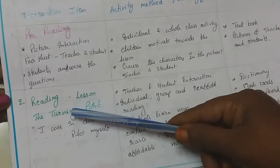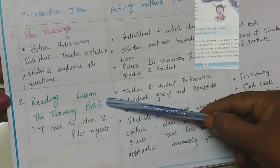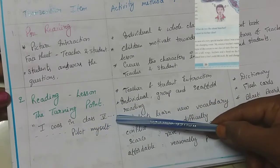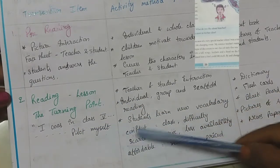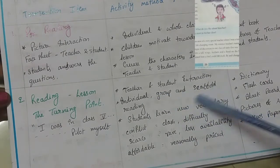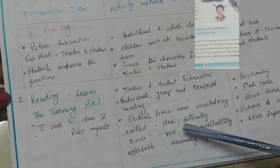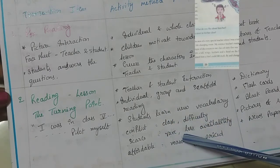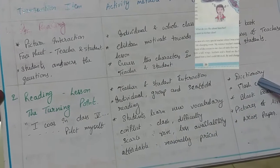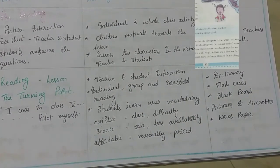In period 2, the reading part, we explain the main lesson 'The Turning Point', segment 1 — 'I was in class 5' up to 'pilot myself.' It involves teacher and student interaction, individual reading, group reading and scaffold reading. Students learn new vocabulary like conflict (clash, difficulty), scarce (rare or less availability), and affordable (reasonably priced). TLM needed: dictionary, flashcards, blackboard, pictures of aircraft, newspaper, etc.